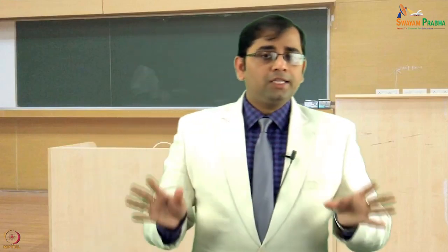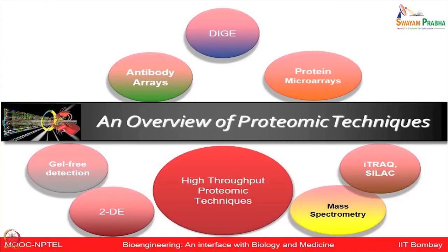Very briefly, let us glance through the different types of proteomics technologies currently being used. There are gel-based platforms, which include 2D gel and different single electrophoresis approaches. There are different types of protein microarray platforms including protein arrays and antibody arrays. There are gel-free approaches, which are essentially mass spectrometry-based, and also include quantitative proteomics using iTRAQ, SILAC, TMT, etc.